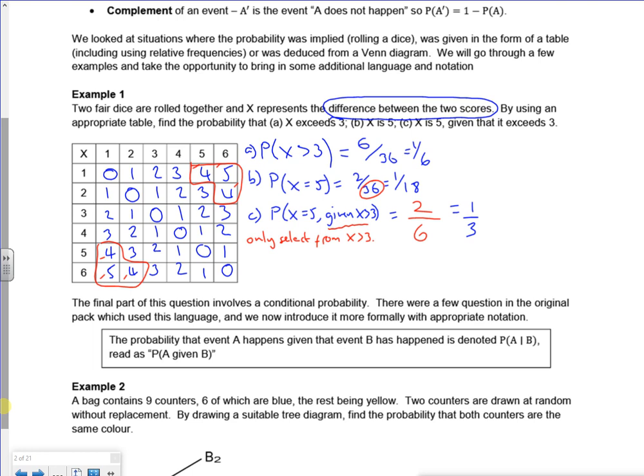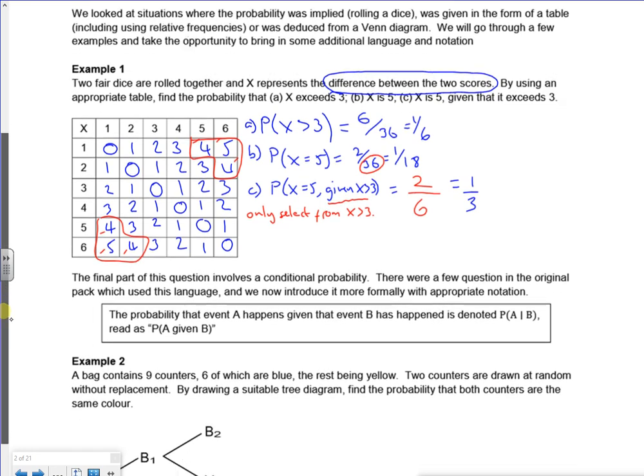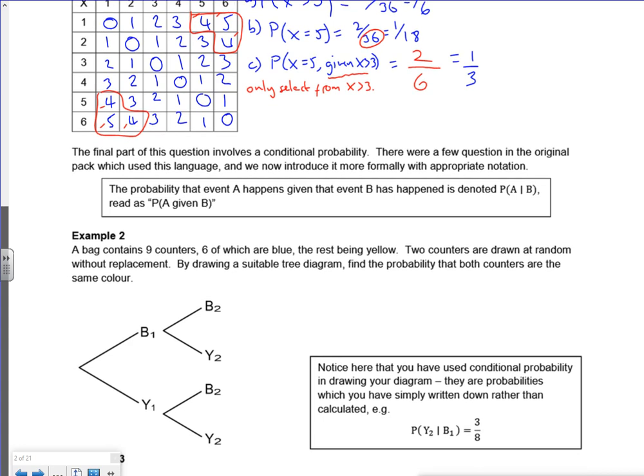Now this is conditional probability, which is what we're working on during this lesson. The final part involves conditional probability. The probability that event A happened given that event B has happened is denoted by that. What you'll find is it's a straight line on here, but when people write it in packs they do it like that, so if it's handwritten it'll look more sloped than a straight line.